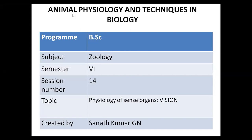Hello. In today's physiology video lecture, we shall try to understand the physiology of vision — exactly how the eye is functioning to perceive light, process it, and how that light energy has been converted into an action potential. This action potential has to be transmitted to the visual cortex in the brain, where image interpretation takes place. This phenomenon and the physiology behind it, we shall try to understand in this class.